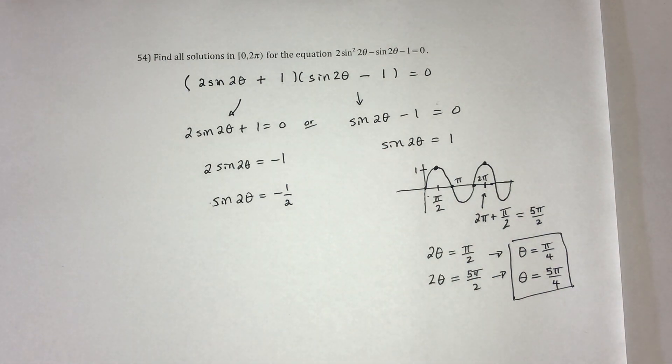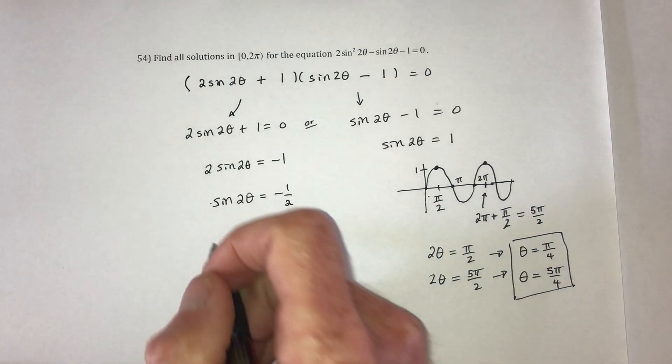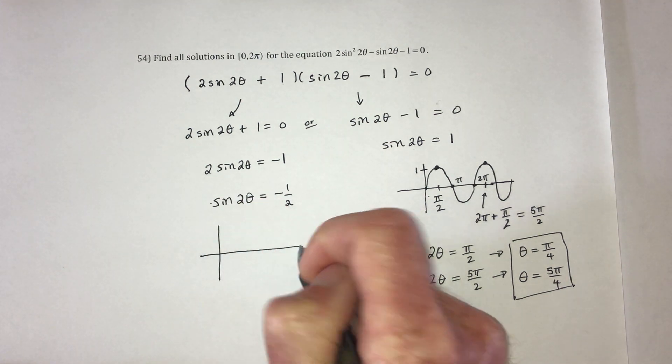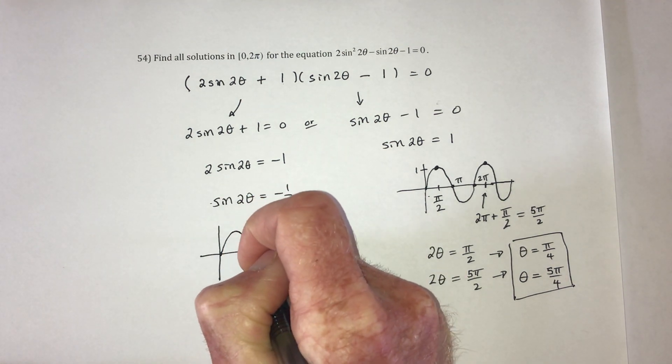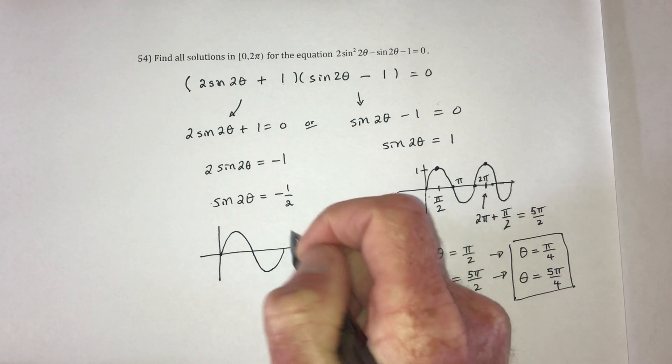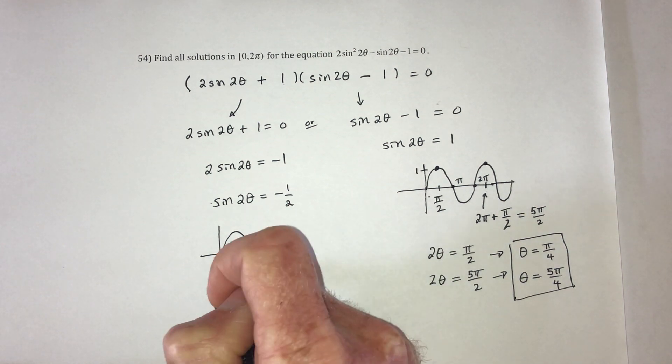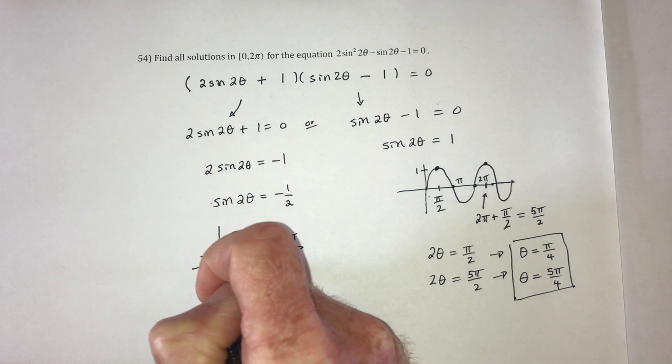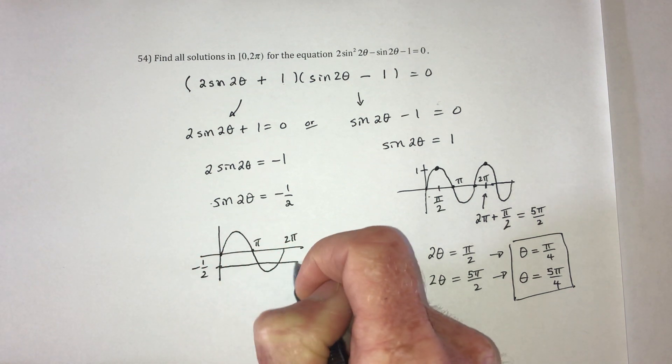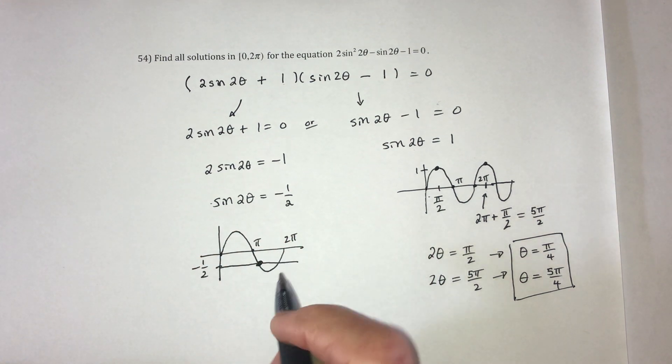So when does sine equal negative 1 half? Here's the sine graph. Negative 1 half would be right here. And if you go across, there's going to be two solutions.